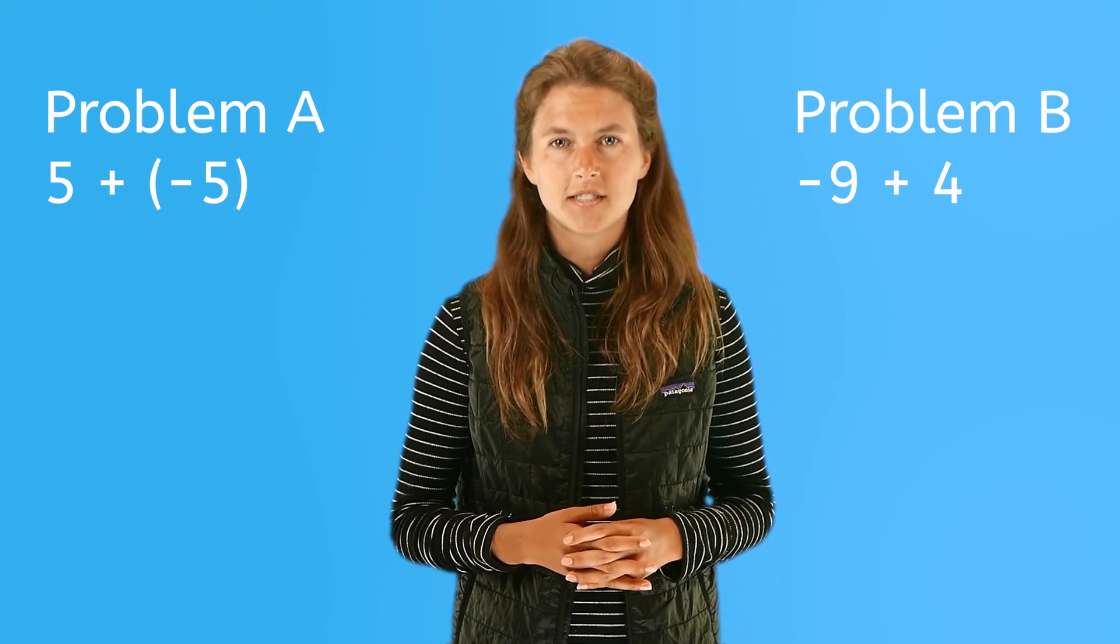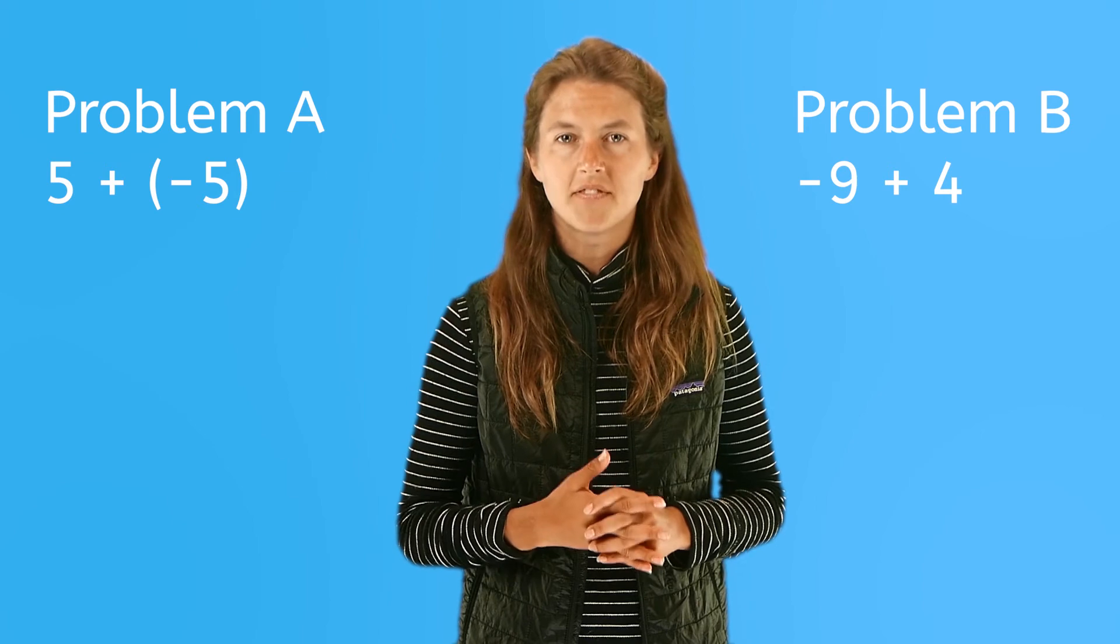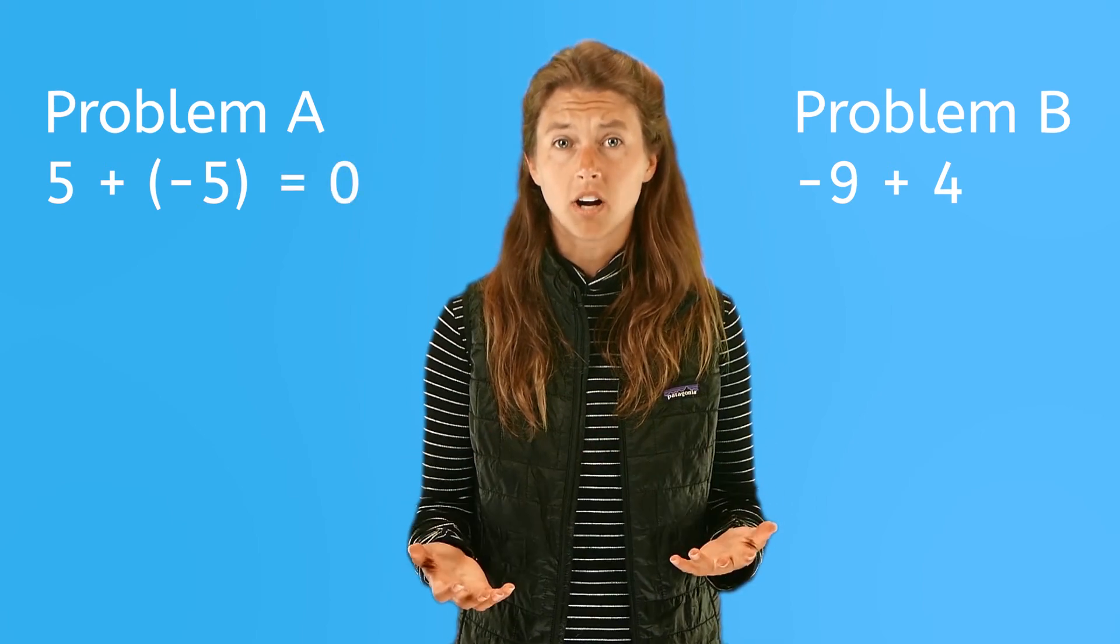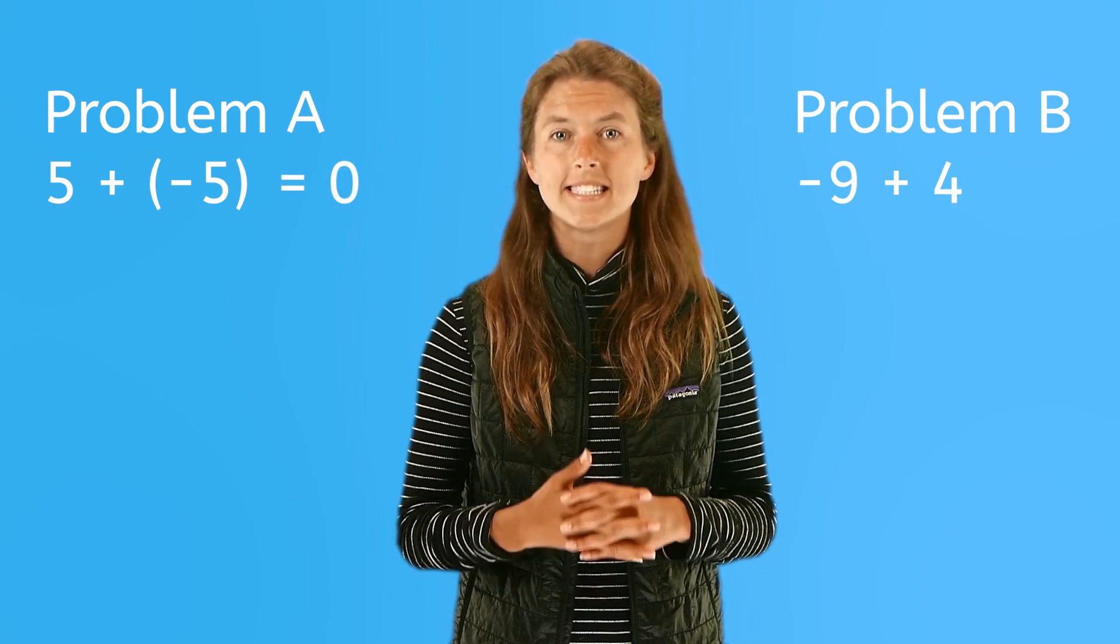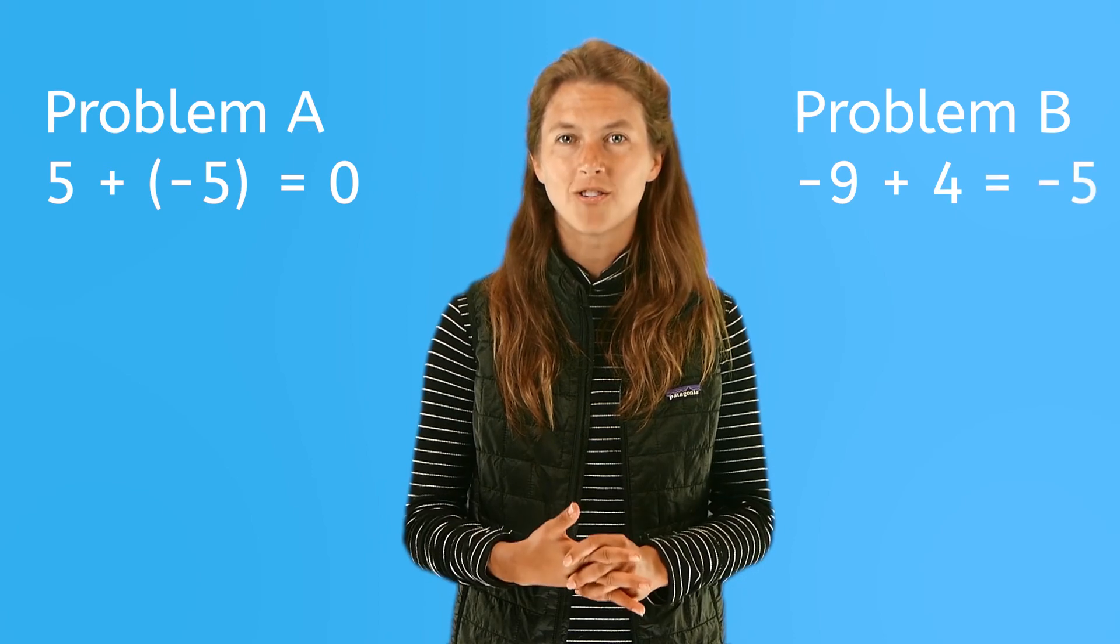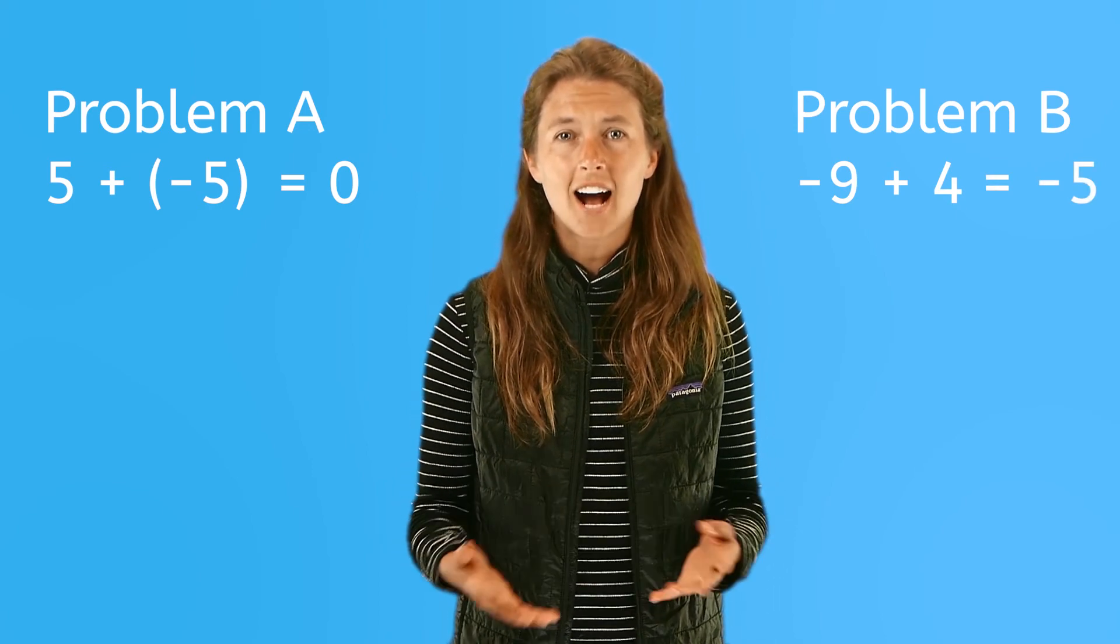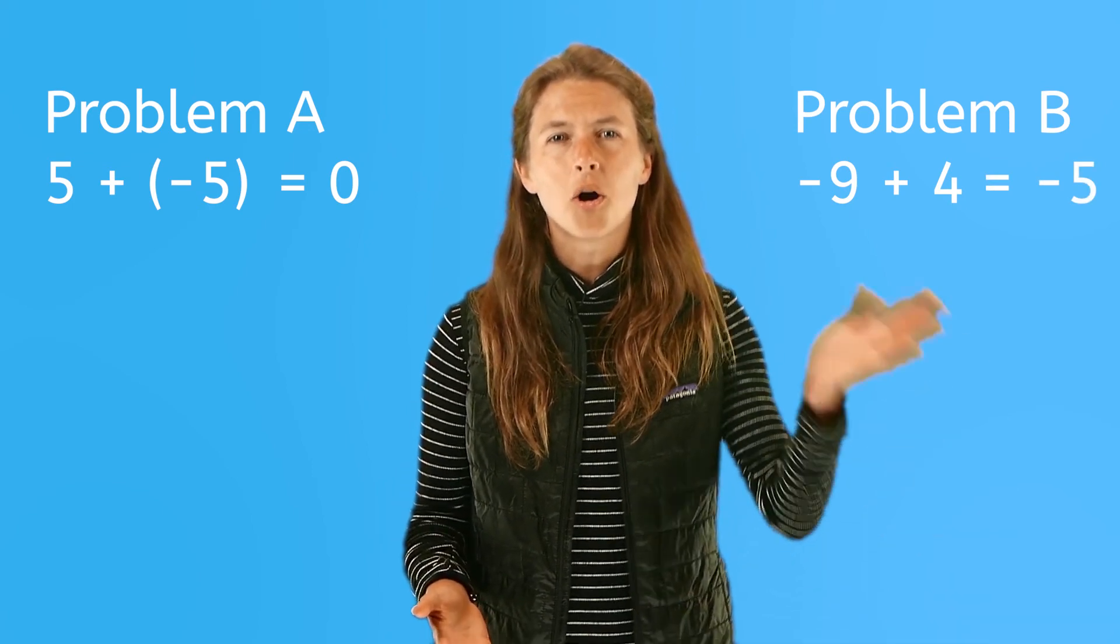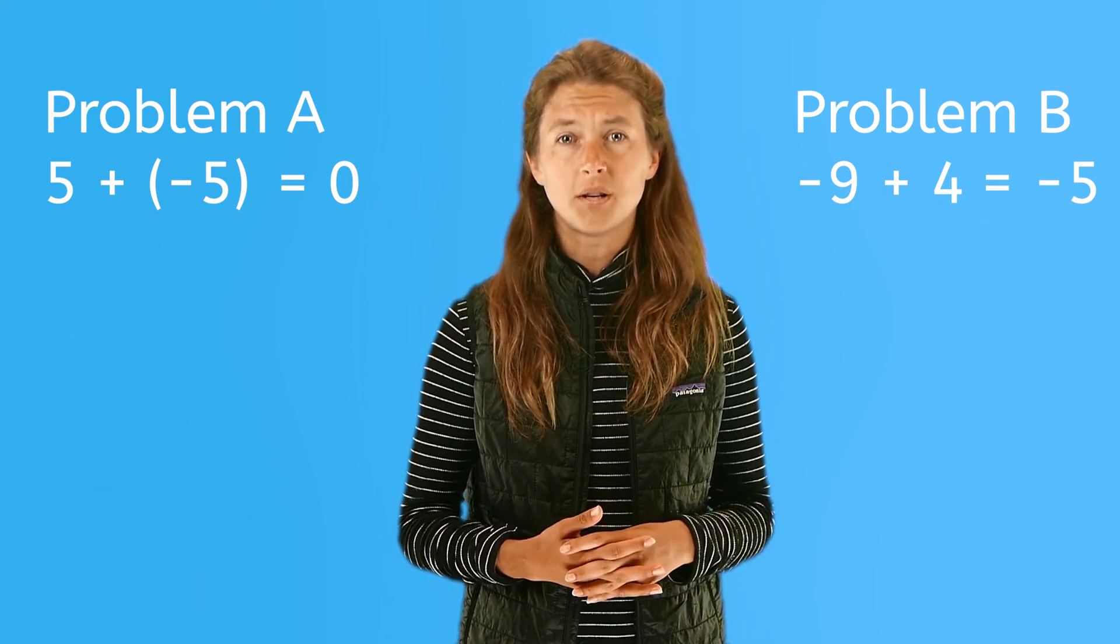Here are the answers. Problem A's answer is 5 plus negative 5 equals 0. And problem B's answer is negative 9 plus 4 equals negative 5. How did you do? You can always go back and review the steps if you need more help.